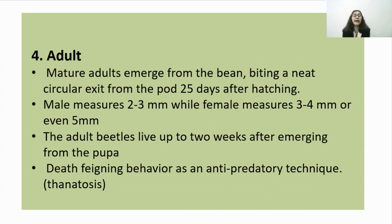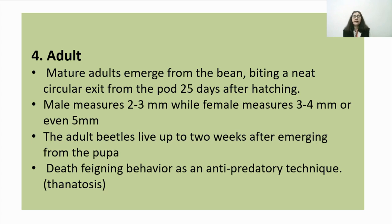The fourth stage is the adult stage. Mature adults emerge from the bean by biting a neat circular exit hole from the pod or legume seed, 25 days after hatching. Males are smaller, measuring 2 to 3 mm, while females measure 3 to 4 mm, and can be up to 5 mm. Adult beetles live up to 2 weeks after emerging. Death-feigning behavior, or thanatosis, is an anti-predatory technique — when disturbed, the beetle turns on its dorsal face with legs in the air, becomes still as if dead, then gets up and runs away.